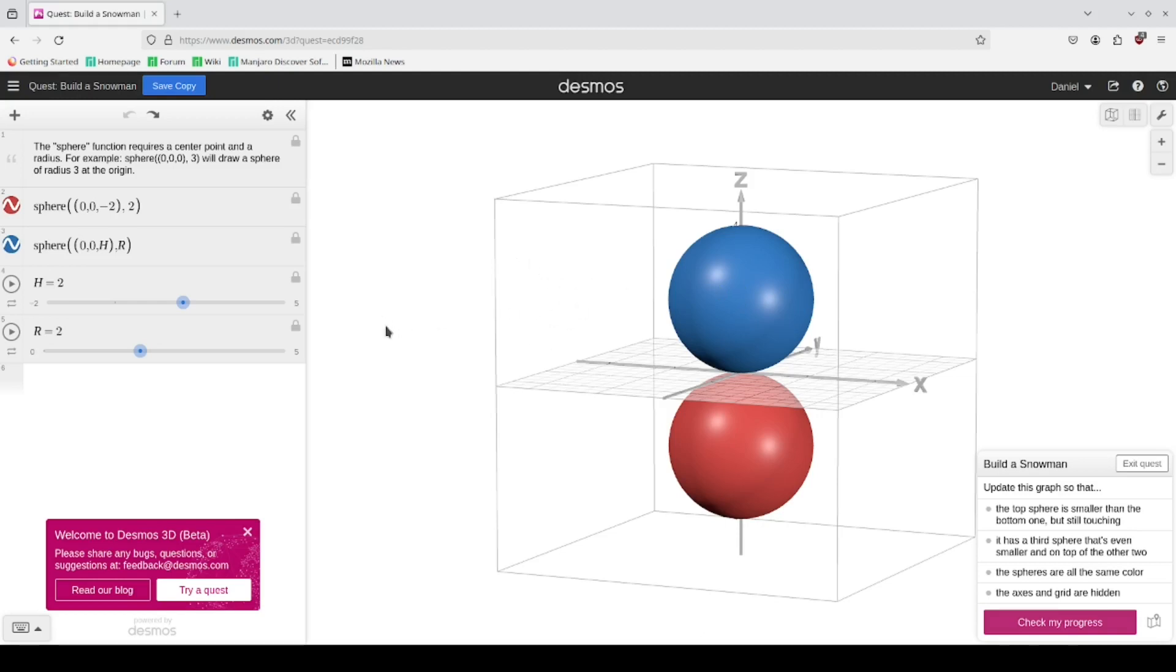Once you get here you'll be met with two spheres, and on the bottom right you can see what the success criteria are.